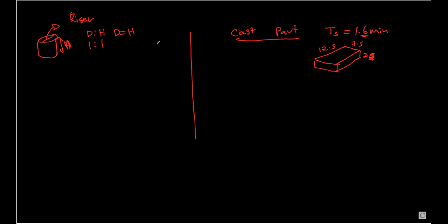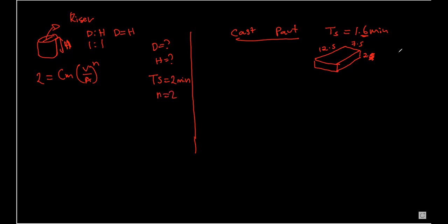The question asks us to determine the diameter and height of the riser. We also know that the desired solidification time for the riser is 2 minutes. So: 2 minutes equals Cm — the Chvorinov's constant — multiplied by (volume over surface area) to the power of n, where we assume n equals 2. We don't know Cm, volume, or surface area yet, so we first need to find the mold constant Cm.